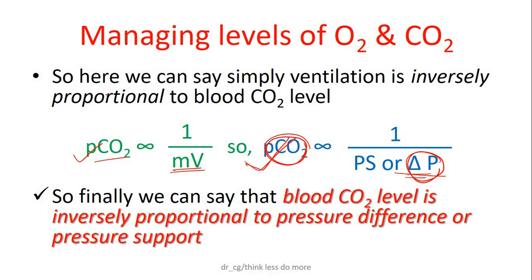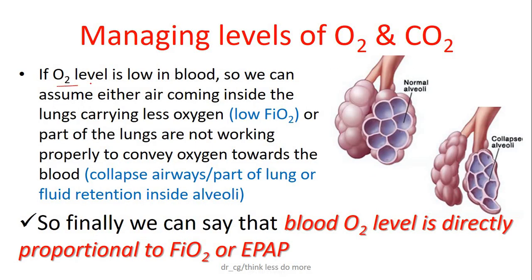And same way, if O2 level is low in the blood, we can assume either the air coming from the atmosphere to the lung is carrying less oxygen — meaning your FiO2 is less — or part of the lungs are not functioning properly to convey oxygen towards the blood, meaning either airways are collapsed or there is fluid retention inside the alveoli. So to improve O2 level, first FiO2 can be increased — in low-flow settings we can increase FiO2 up to 60%. And to further improve oxygenation, we can increase the EPAP level. So blood O2 level is directly proportional to FiO2 and also directly proportional to EPAP.